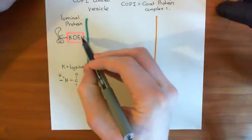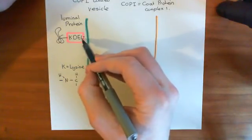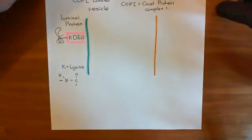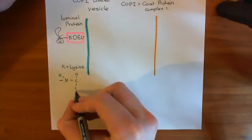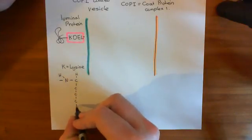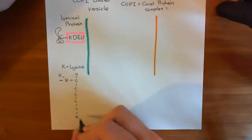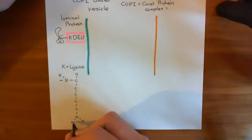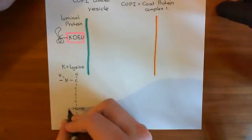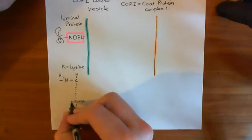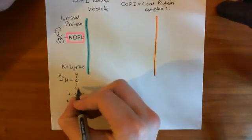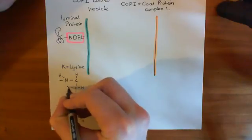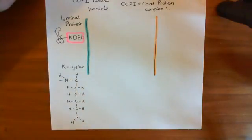You might wonder why L doesn't stand for lysine — because L, as we'll see at the end of this sequence, stands for leucine instead. So lysine had to be something different; they picked the nearest letter. Lysine has a four-carbon structure: one, two, three, four. Right at the end it has an amino group, and all the other carbons are saturated with hydrogens. So this is the R group of lysine — a four-carbon hydrocarbon chain with an amino group at the end.